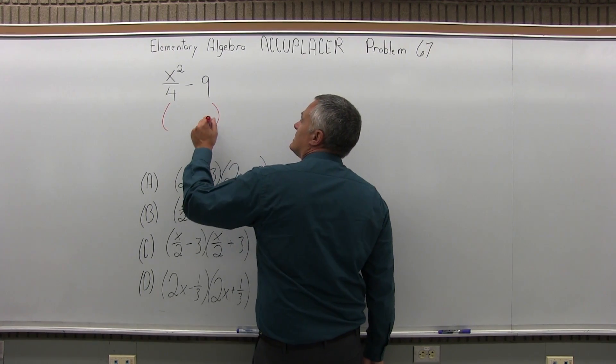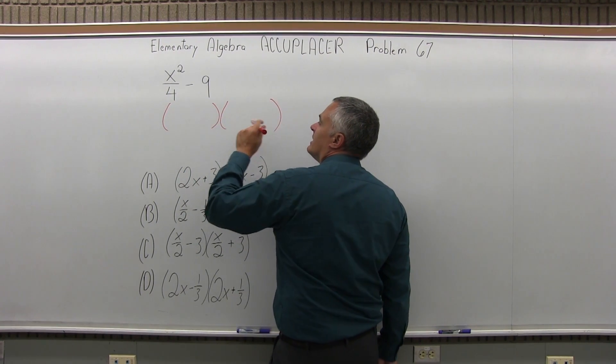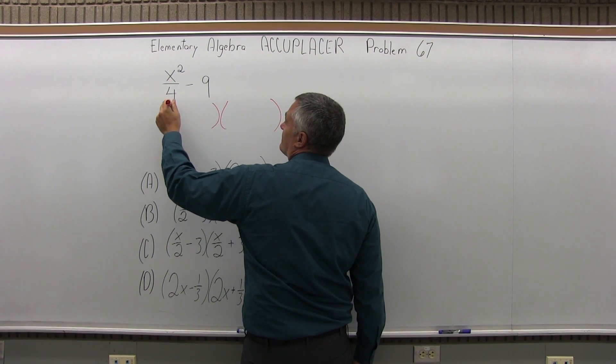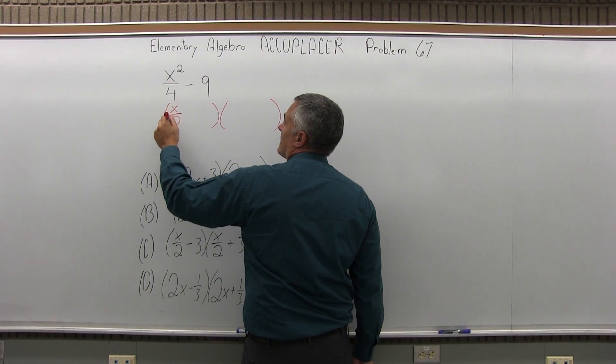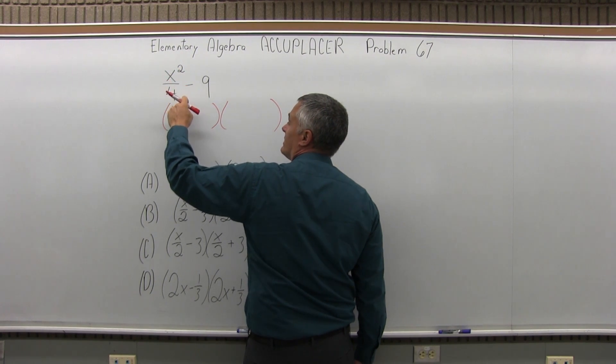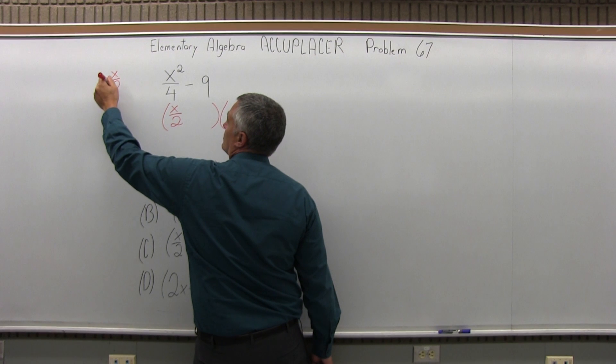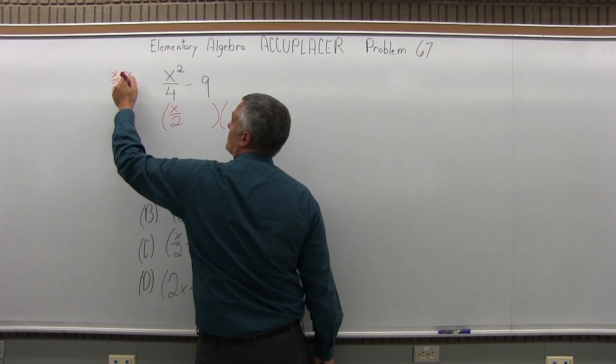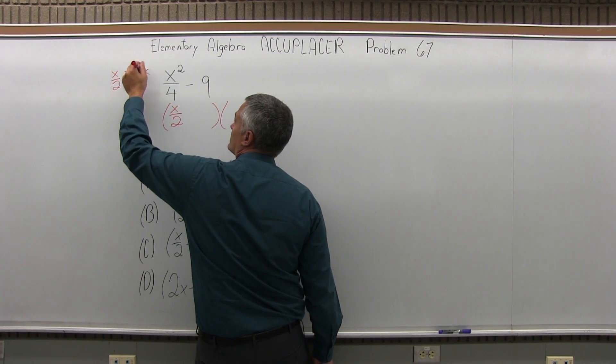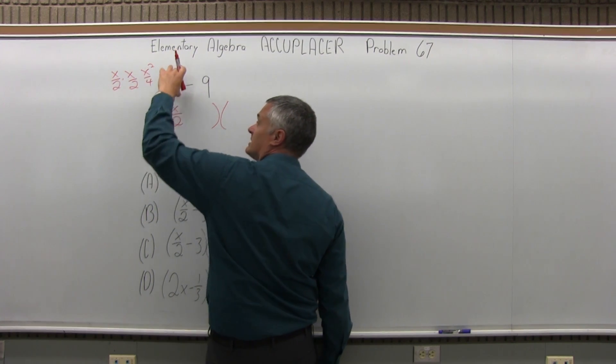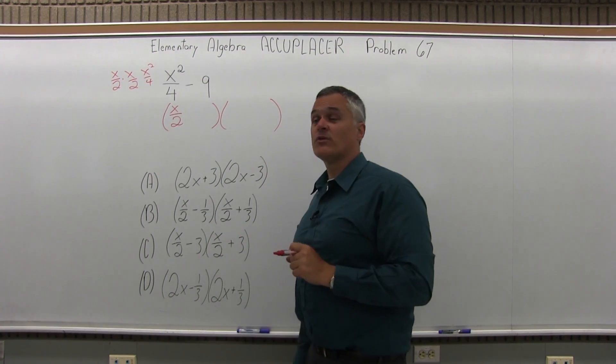So we're going to have two sets of parentheses. The square root of the first piece is x over 2. The square root of x squared over 4 is x over 2, and you can try it. x over 2 times x over 2, x times x is x squared and 2 times 2 is 4. So it is the square root. That value times itself gives you back x squared over 4.